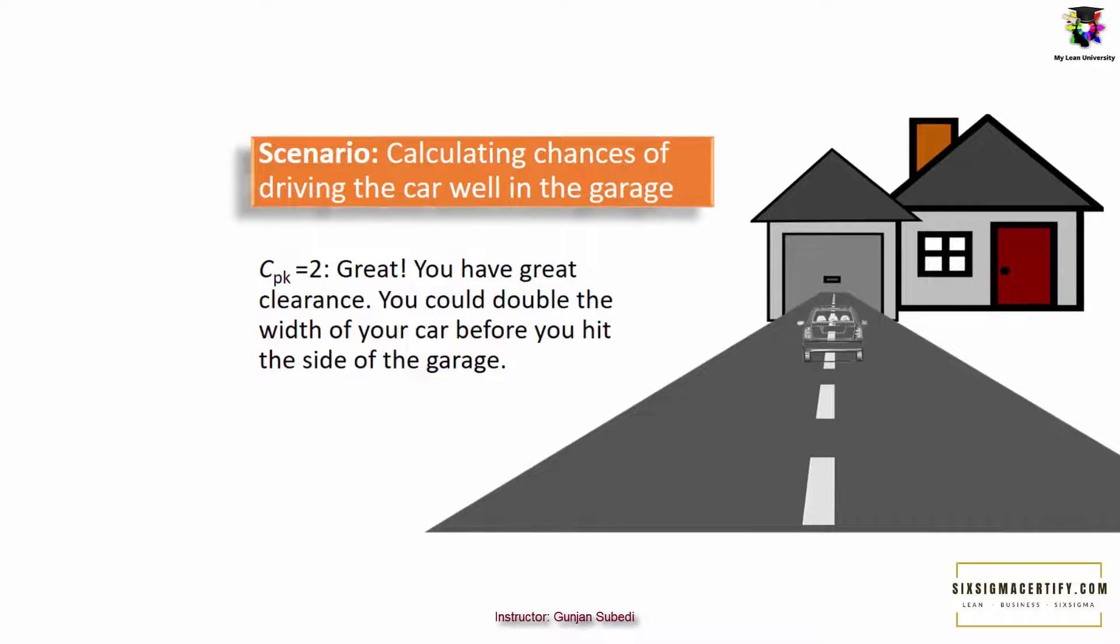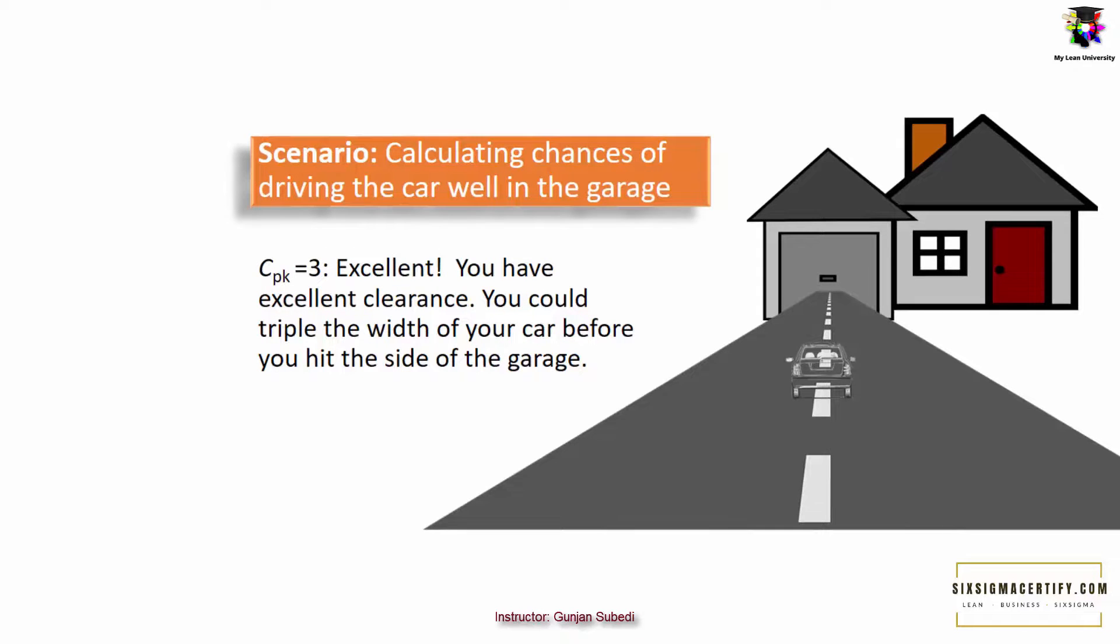If CpK is 2, great, you have great clearance. You could double the width of your car before you hit the side of the garage. If CpK is 3, excellent. You have excellent clearance. You could triple the width of your car before you hit the side of the garage. This is just an example to let you understand that higher the value of CpK, more stable will be the process.